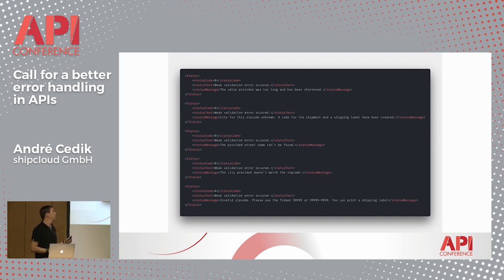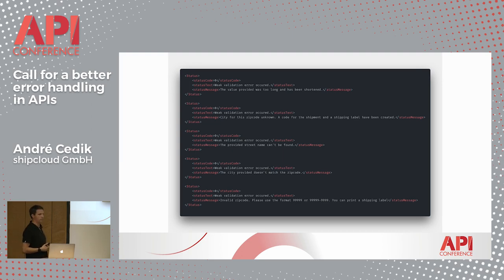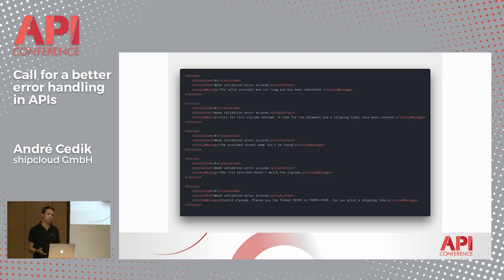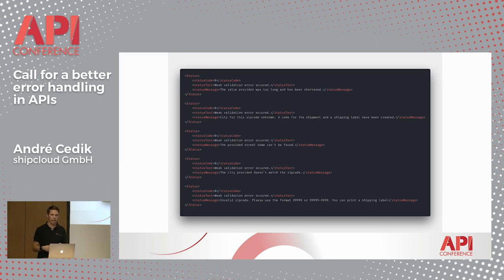For us at ShipCloud, this is the case when one of the systems we're talking to returns a message that looks like this. We have five examples of additional information we get in the response. The carrier was able to create a shipping label, so they returned a 200 OK and the customer who initiated the request will get charged for that API call. But our customers might run into trouble if we don't communicate these warnings to them, because they might get charged extra for a shipment that needs special handling to be delivered.